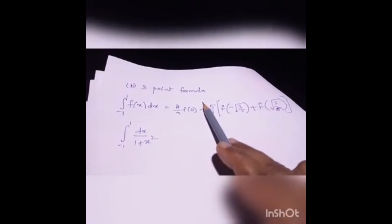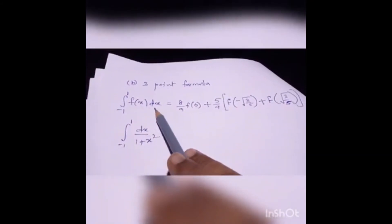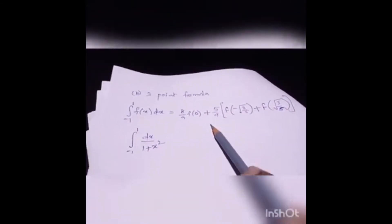For the same question, we now solve using the three-point formula. The three-point formula is: integration of minus 1 to 1 of f(x) dx equals (8/9) times f(0) plus (5/9) times f(minus square root of 3/5) plus f(square root of 3/5). This is the formula for the three-point method, and our question is the integration of minus 1 to 1 of dx over (1 plus x squared).